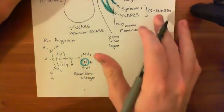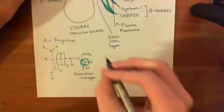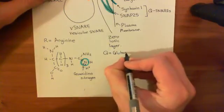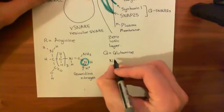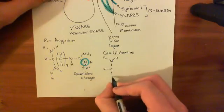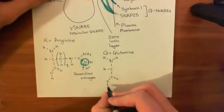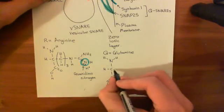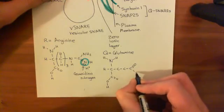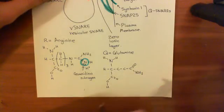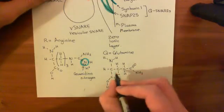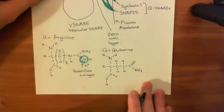Now let's talk about Q-snares — syntaxin 1 and SNAP25. Q is the single-letter amino acid code for the amino acid glutamine. Let me show you the structure of glutamine. Starting with the generic amino acid structure common to all amino acids: here's the alpha carbon, and off the alpha carbon we have the carboxylic acid group. The R group in the case of glutamine is a free carbon structure, and then off this carboxyl group it's been turned into a primary amide. So you have a primary amide group on the terminal, and these carbons just have hydrogens off — it's a free carbon group with a primary amide group right on the end.